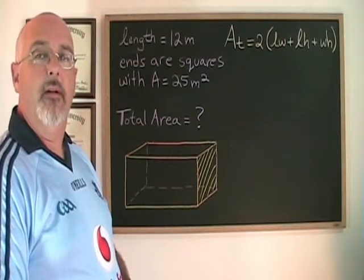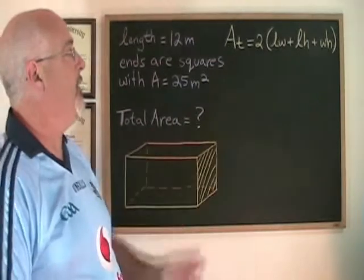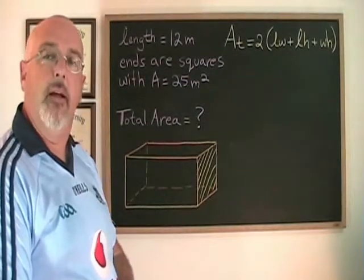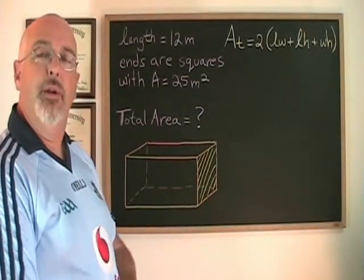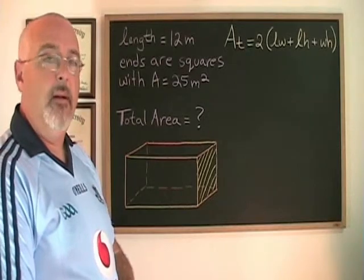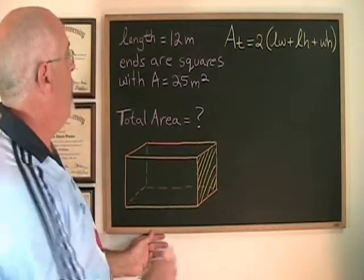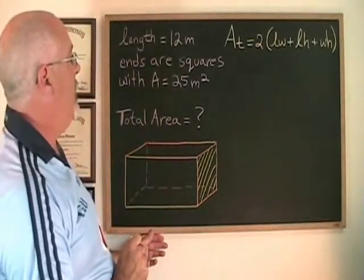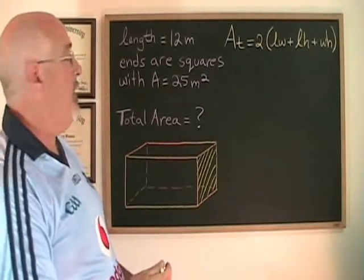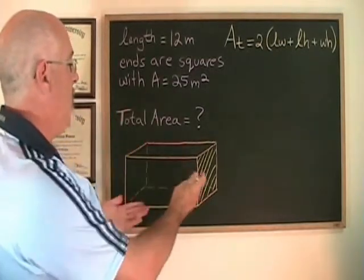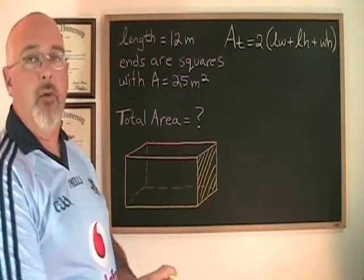So what ways are there of asking a question that involves this formula for the total area of a rectangular prism that makes the question more tricky? Here is one where we are given the length, 12 meters, but we are not given the width or height. However, we are told that the ends of the box are squares with area of 25 meters squared.